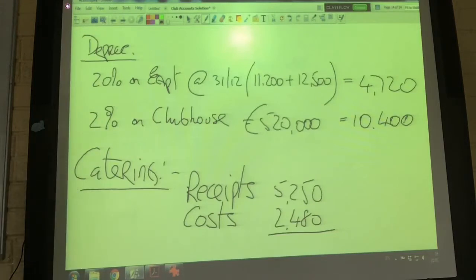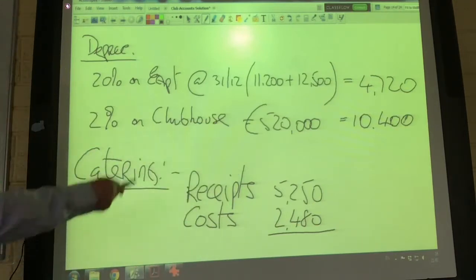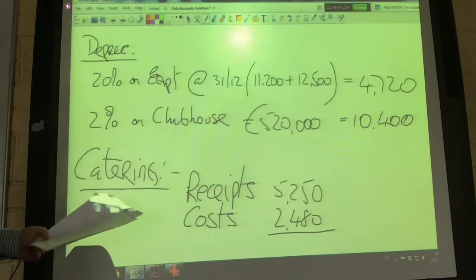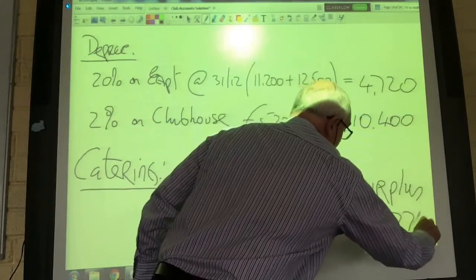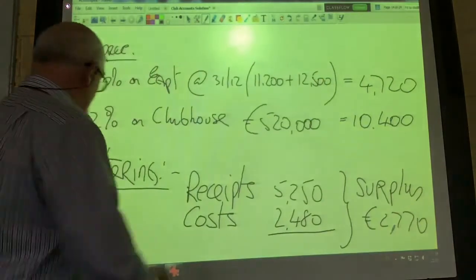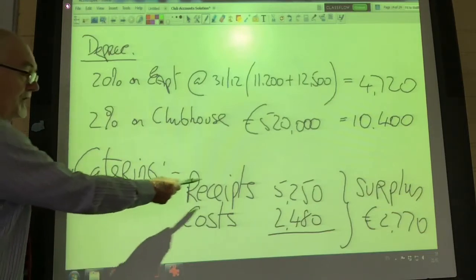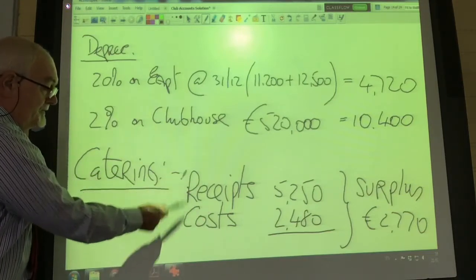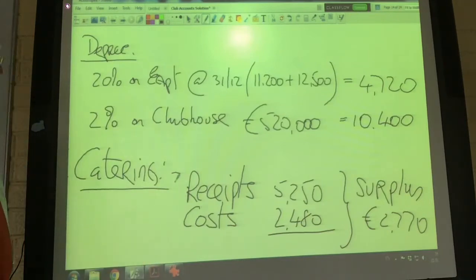The club runs a catering service from which it received 5,250 euro during the year, with costs of 2,480. So we made a surplus on catering of 2,770. We'll credit that to our income and expenditure account. Be careful not to put these two items in separately - the income is 2,770.